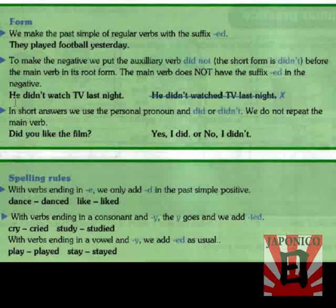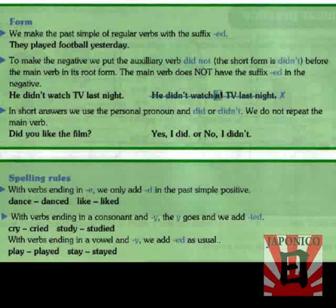For example: 'He didn't watch TV last night.' This is correct. We cannot say 'He didn't watched TV last night' — that is incorrect. In the negative past, since we use 'did', the 'did' already indicates the past tense. So since it already indicates past, it is not necessary to add the -ed ending. That sentence is incorrect.